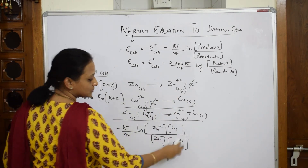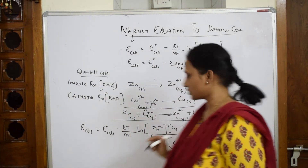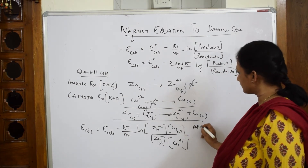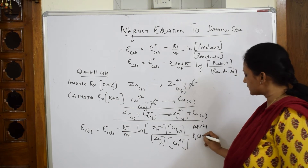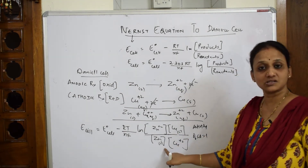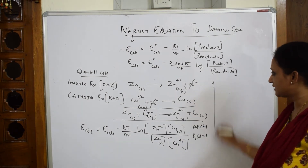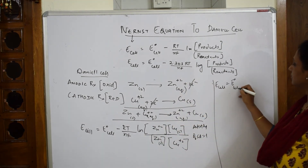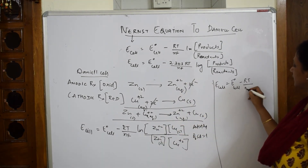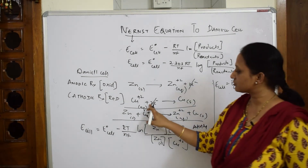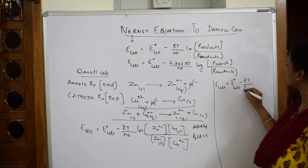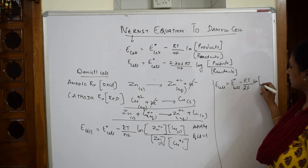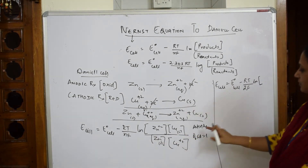We know the activity of solids is equal to 1, so both Zn(s) and Cu(s) are neglected. This gives us: E_cell = E°_cell minus RT by NF. The number of electrons transferred, N, is equal to 2, so we have 2F in the denominator. What remains inside the ln is Zn²⁺ concentration over Cu²⁺ concentration.